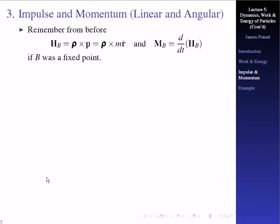And if you remember from before, we had the angular momentum is equal to rho cross p, where rho is our moment arm. And then, of course, p is our momentum, our linear momentum. And in this case, if we replace the momentum by its definition, that's m r dot.